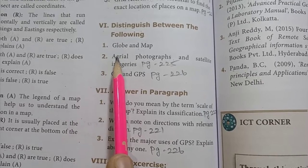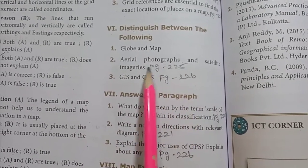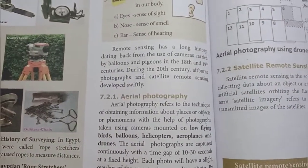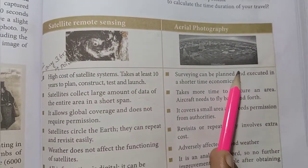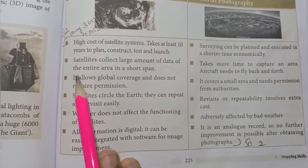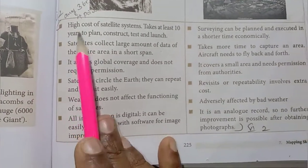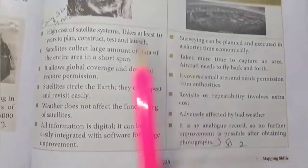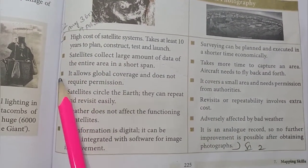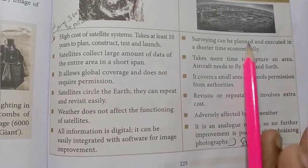Second, aerial photographs and satellite imagery. Page number 225. Satellite remote sensing, aerial photography. In the points, six points. Any three points or four points. Roman numeral sixth, second one answer. Any three or four points, there is no problem. Three points or four points of your choice.